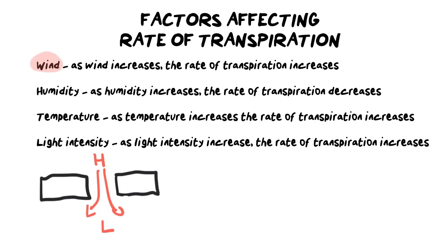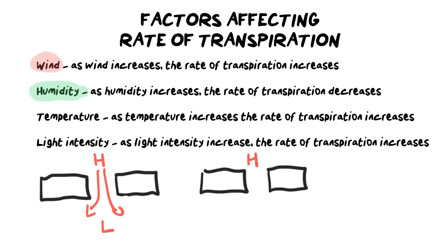Humidity is the opposite of wind in its effect. The regular movement is from a high to a low concentration, but humidity means there is already a high concentration of water in the air on the outside of the leaf. If there is a lot of water vapor both inside and outside the leaf, it reduces the concentration gradient and slows transpiration down. Humidity is how much water is in the air, and as humidity increases, the rate of transpiration decreases.